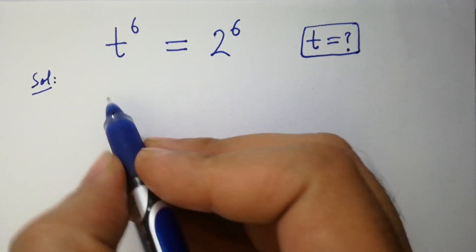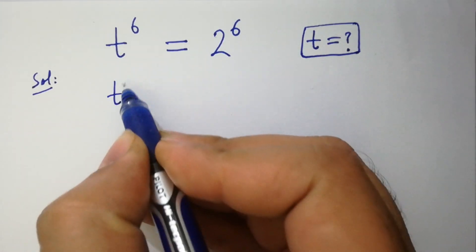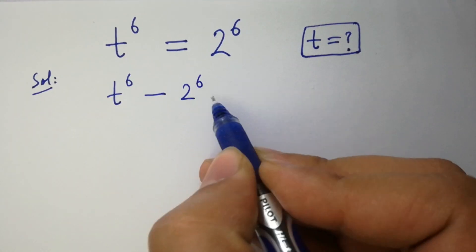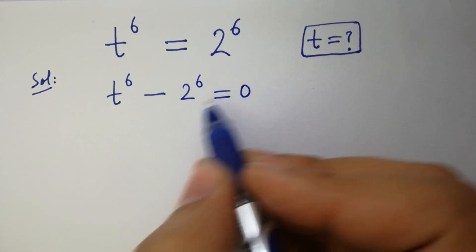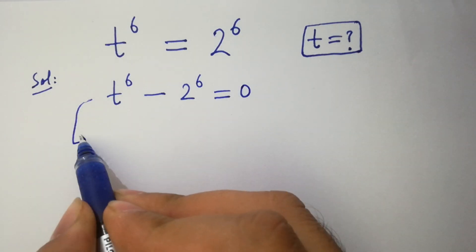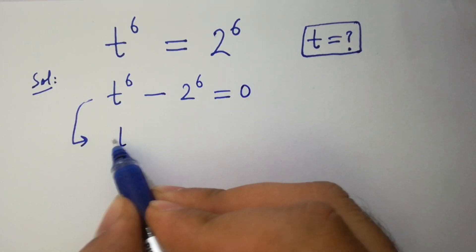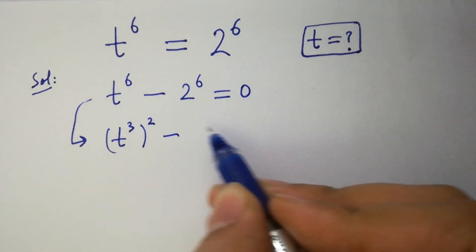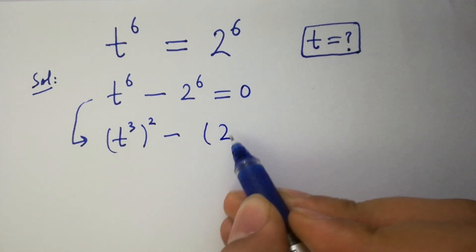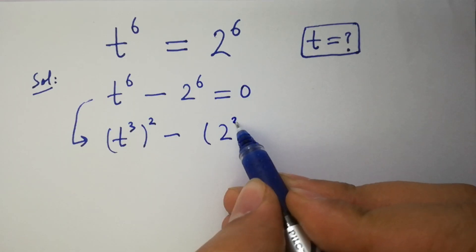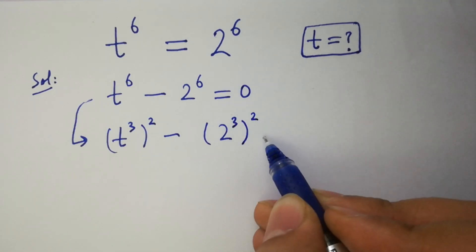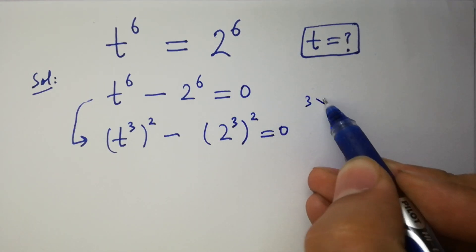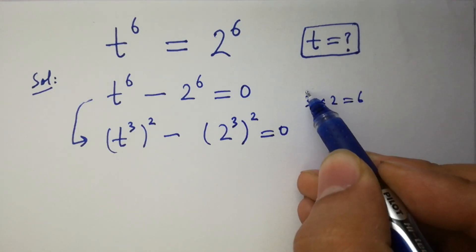It can be written as t to the power 6 minus 2 to the power 6 equal to 0, which is the same as t to the power 3, to the whole power 2, minus 2 to the power 3, to the whole power 2, equal to 0, since 3 times 2 equals 6.